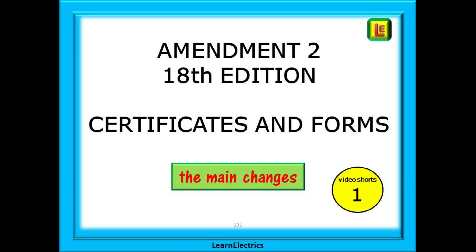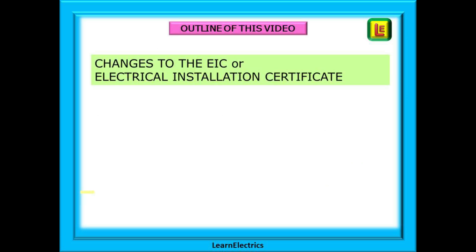Welcome to this video from LearnElectrics about Amendment 2 of the Wiring Regulations BS 7671 18th Edition. In these short videos we will concentrate on just one of the changes that Amendment 2 has undergone. The logic behind this is that it is easier to absorb and retain new information in short concentrated bursts. This video is just about the changes to the certificates and forms that are used to certify electrical work or report on the condition of an installation during a periodic inspection.